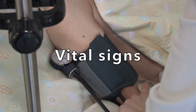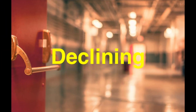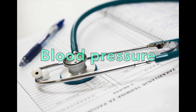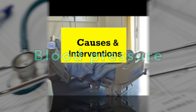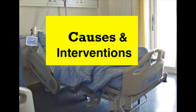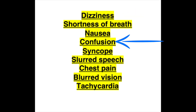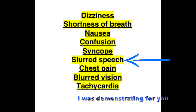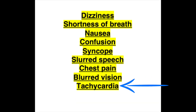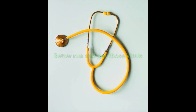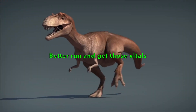Vital signs are often a good indicator that the patient is declining. Blood pressure in particular can tell us many different things about the patient's status. Before we jump into the causes and interventions for post-op hypotension, here's a list of some things that can indicate that the individual is hypotensive: dizziness, shortness of breath, nausea, confusion, syncope, slurred speech, chest pain, blurred vision, tachycardia. This is not an all-inclusive list — these are just some of the main things we will often see. If the individual is experiencing any one of these things, vital signs should be taken right away.